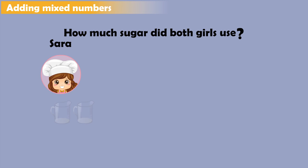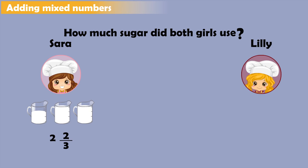Sarah used 2 cups of sugar and another 2 3rds of a cup. Lily used 1 cup of sugar and another 2 3rds of a cup, as shown. So, what is the total amount of sugar they both used?